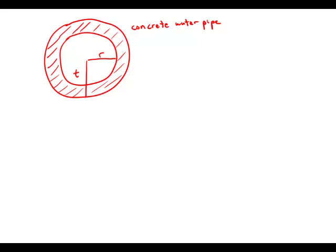The figure shows the circular cross-section of a concrete water pipe. The inside radius of the pipe is r feet and the outside radius of the pipe is t feet. What is the value of r? We're looking for the numerical value of r.